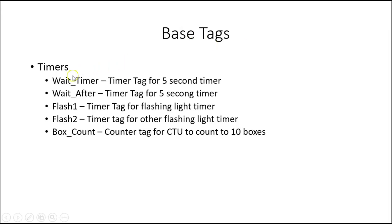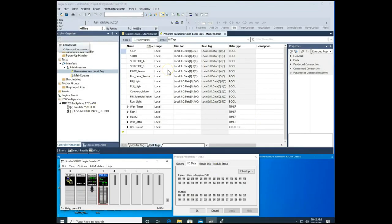Here are the base tags we'll be using. We have four timers: a Wait Timer that waits before the process fills the box, a Wait After Timer that waits five seconds after the box is full, and two Flash Timer tags that create flashing lights. Finally, we have a Box Count tag, which is our counter tag for the CTU to count up to ten boxes.